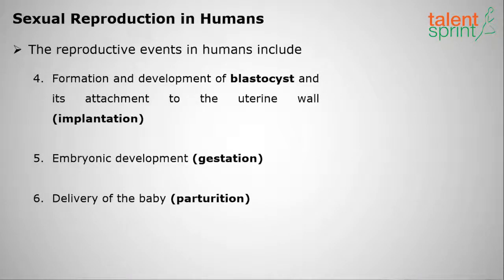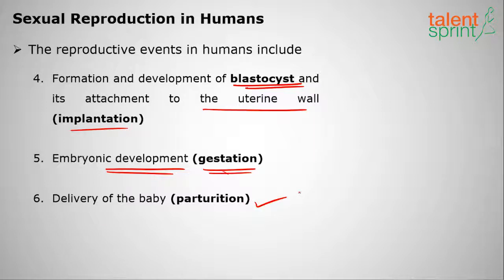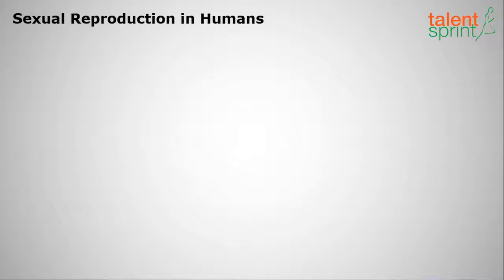The fourth stage is the formation and development of the blastocyst. After the egg is fertilized, it becomes a blastocyst, which attaches to the uterine wall — this is called implantation. It then develops into an embryo, a process called gestation. The delivery of the baby is called parturition. These are the six stages of human reproduction.